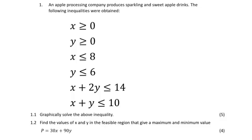This is the example I'm going to use to explain linear programming. An apple processing company produces sparkling and sweet apple drinks, so there are two types of drinks we are dealing with here: sparkling and sweet. The following inequalities were obtained. X is representing the number of sparkling drinks and Y is representing the number of apple drinks. The first two inequalities that we are given are always there by default in level 3 linear programming.